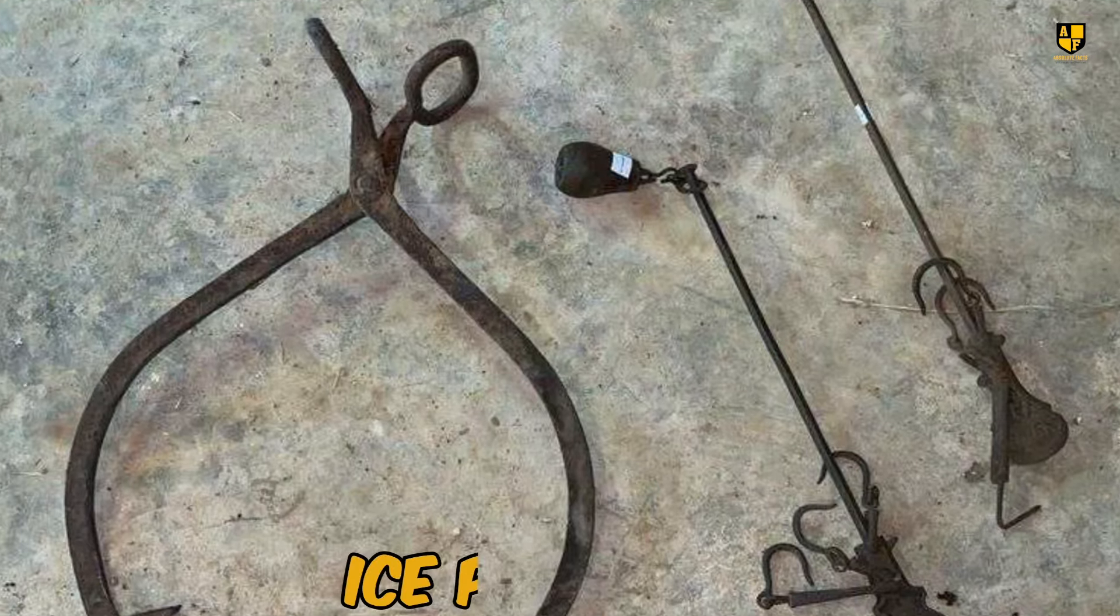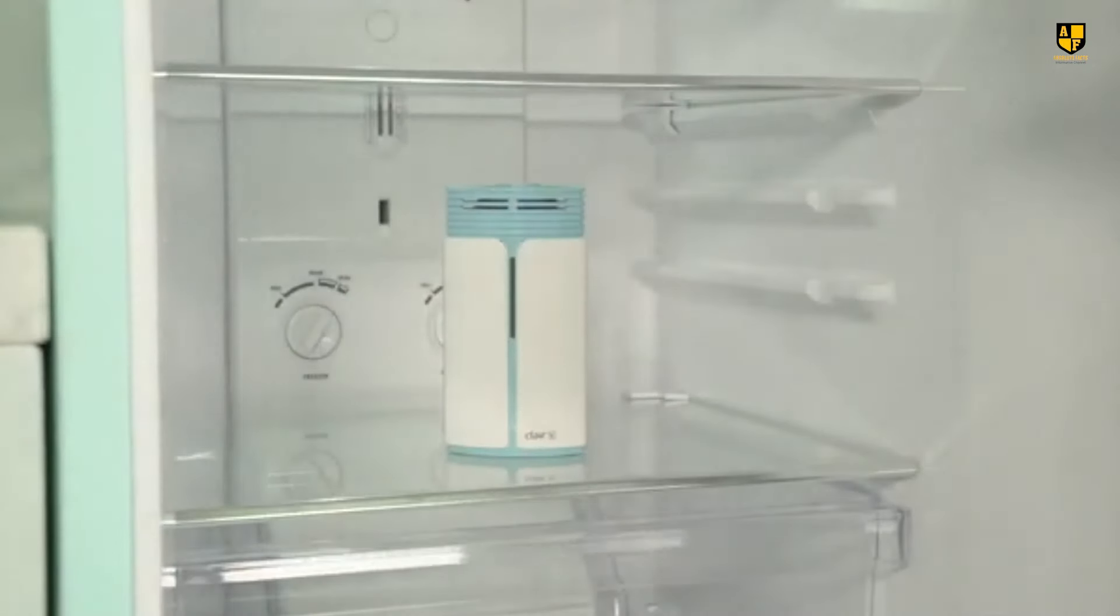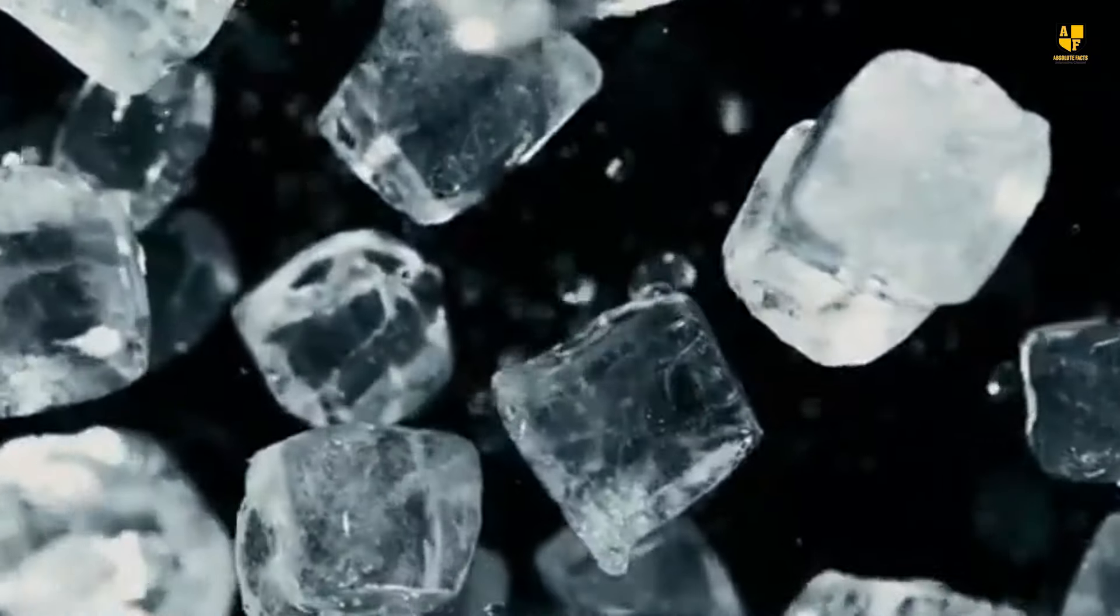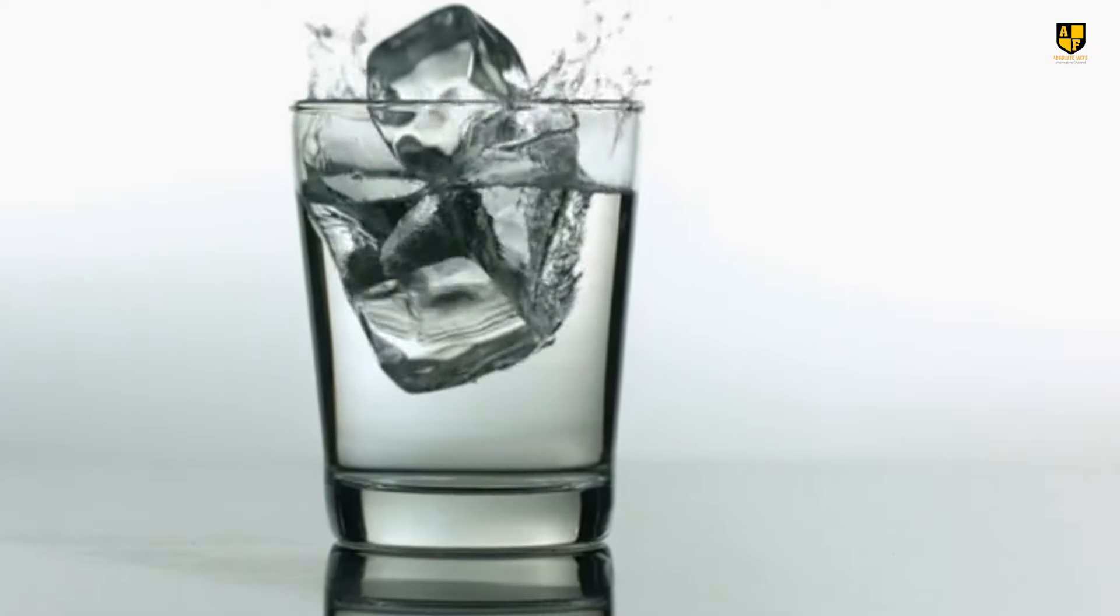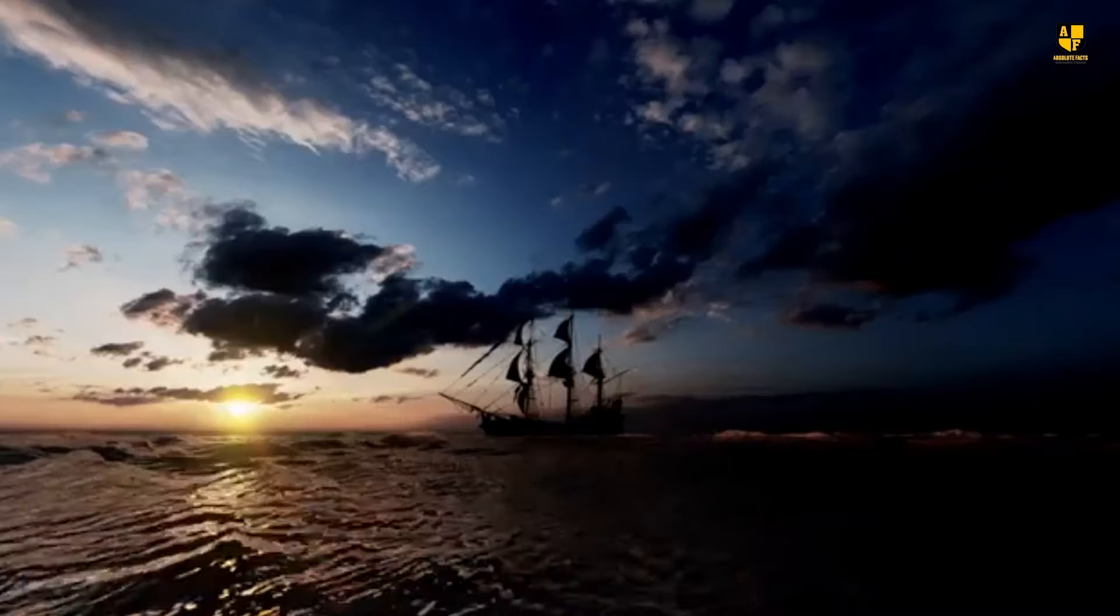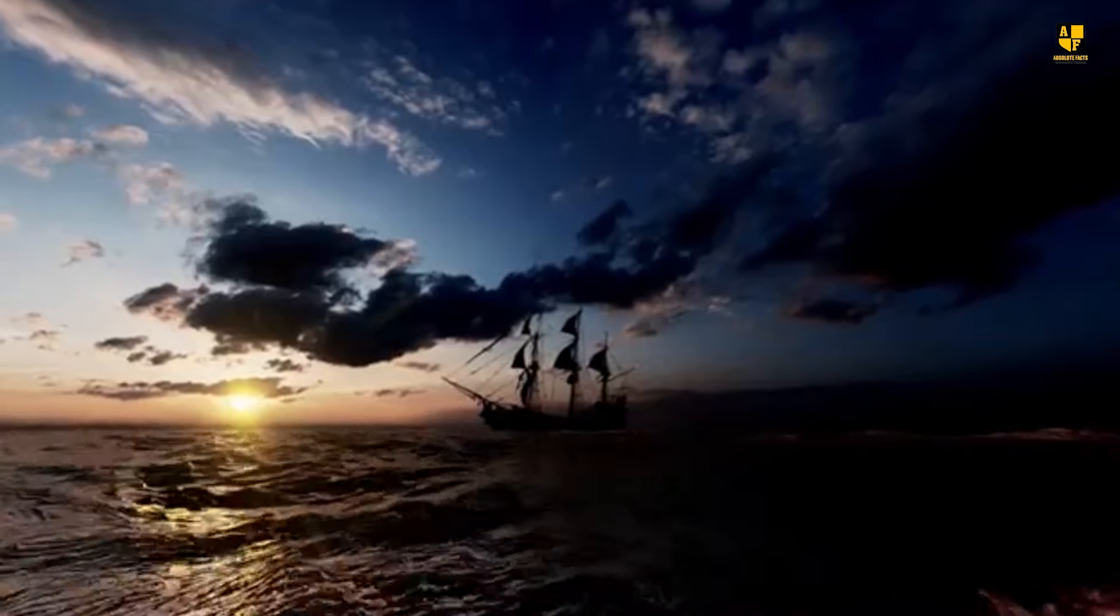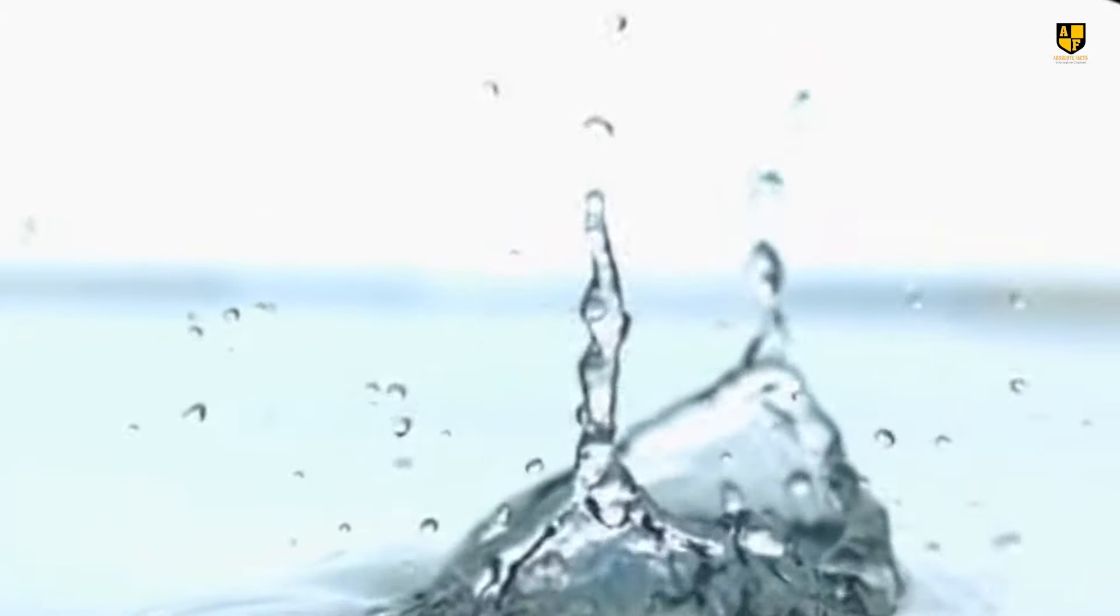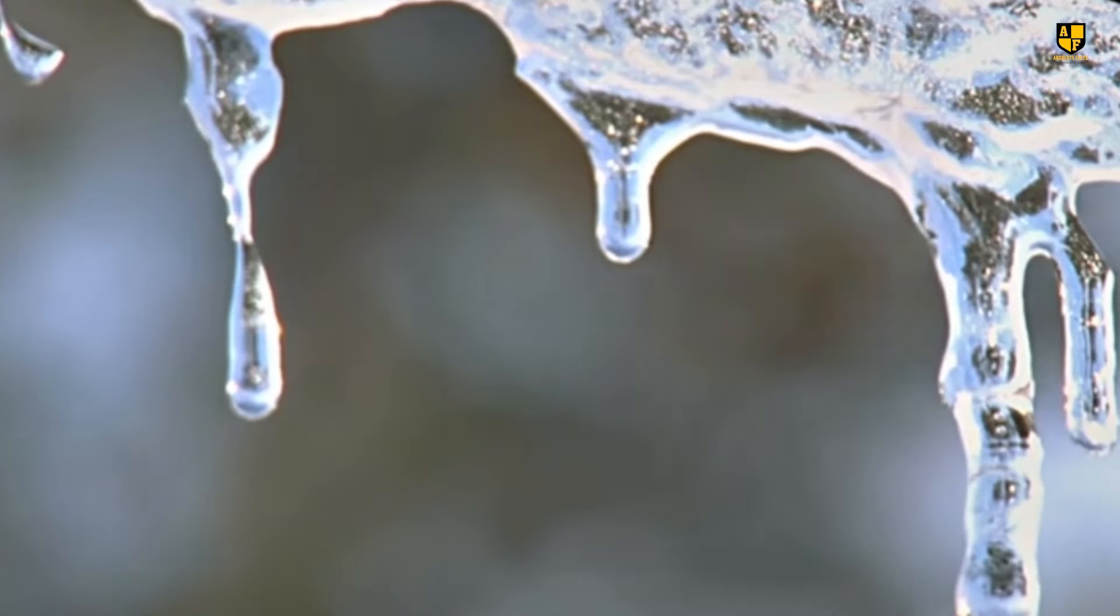Number 8. Ice Pick Hook. Before refrigerators became commonplace, ice blocks were an everyday necessity. Massive chunks of ice were harvested, stored, and sold throughout the year. To manage these heavy, slippery blocks, workers used a specialized tool known as the Ice Pick Hook. Resembling a pirate's hook, this device featured sharp points for gripping and breaking ice into smaller, manageable pieces. While it might resemble a medieval weapon to modern eyes, it was an indispensable tool in the booming ice trade of the 19th century.